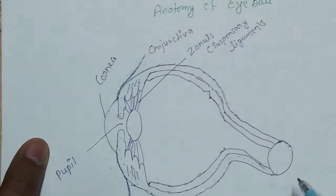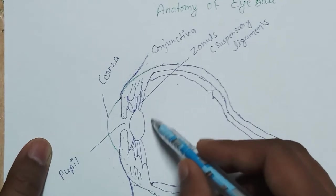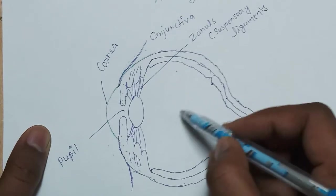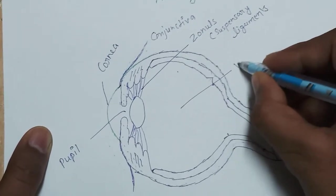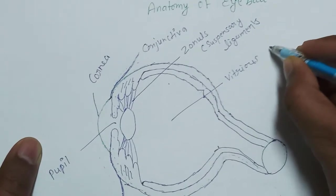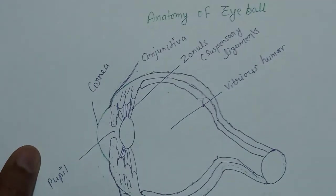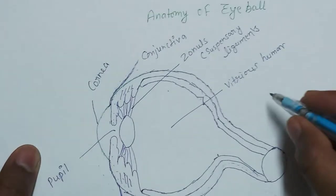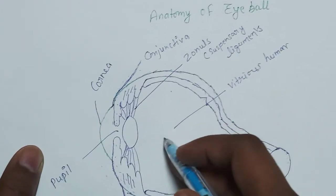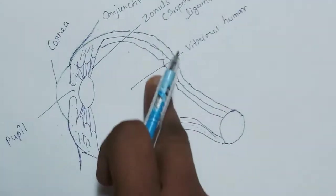After this, also present here is the vitreous body, also called vitreous humor. It is a gel-like structure. Vitreous humor — gel-like structure — is filled in the posterior segment of the eyeball.